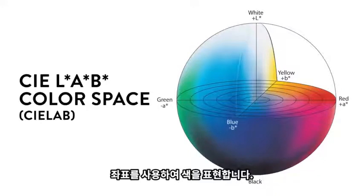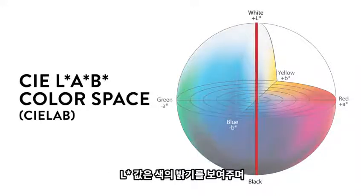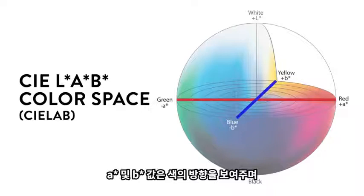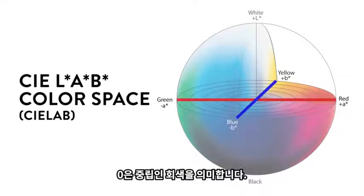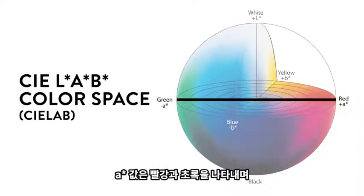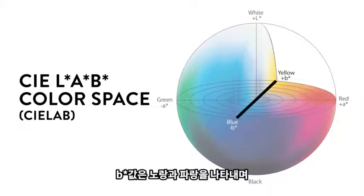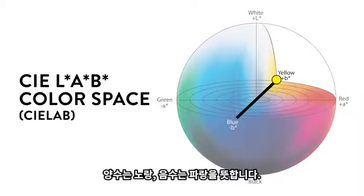The L* axis indicates the lightness of a color, with 0 representing black and 100 representing a perfect diffuse white. The A* and B* axes are the color directions, with 0 being neutral gray. The A* axis represents red to green, with red in the positive extreme and green in the negative extreme. The B* axis represents yellow to blue, with yellow in the positive extreme and blue in the negative extreme.